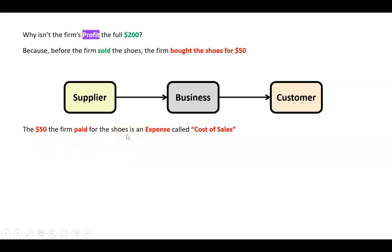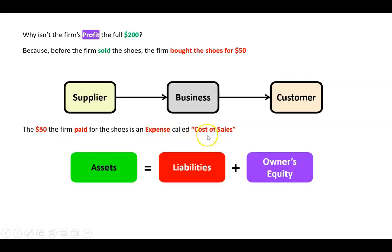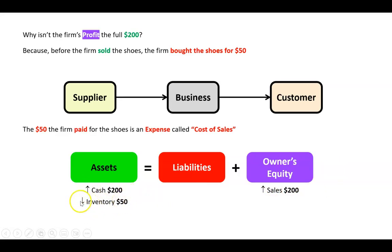The shoe was probably bought a month ago and has just been sitting in the storeroom as inventory. When we sell it, we give up that inventory, and it becomes an expense called cost of sales. So cash went up, sales went up increasing owners equity, but inventory — an asset — decreased, and that becomes an expense which decreases owners equity.